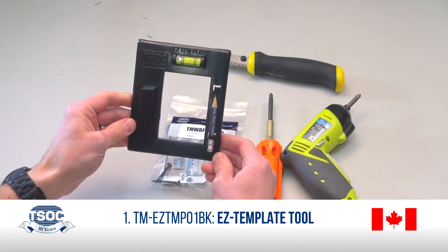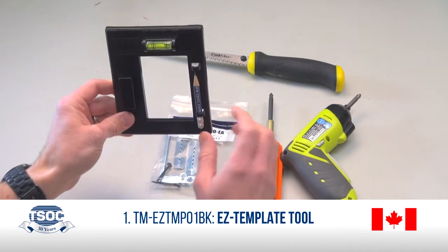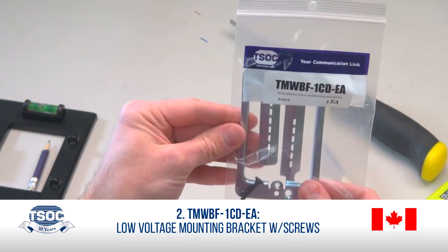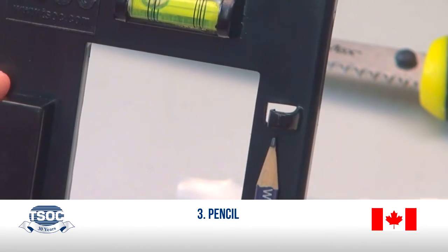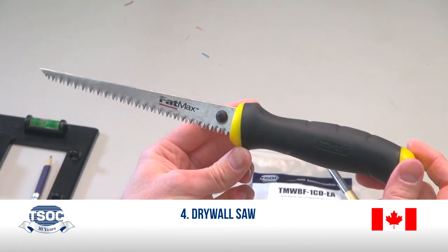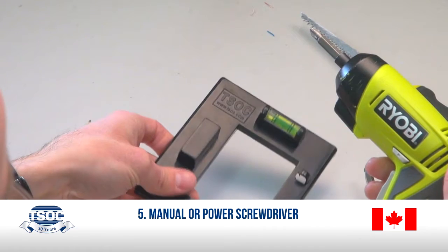Materials Required: TM EZ-TM P01BK EZ-Template Tool, TM WBF1CD Low Voltage Mounting Bracket with Screws, Pencil, A Drywall Saw, and A Manual or Power Screwdriver.